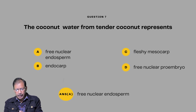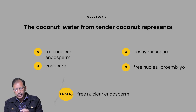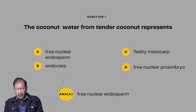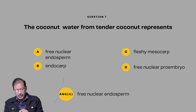Question number seven: The coconut water from the tender coconut represents what? Options are: A — free nuclear endosperm; B — endocarp; C — fleshy mesocarp; D — free nuclear pre-embryo. Answer will be A — free nuclear endosperm.